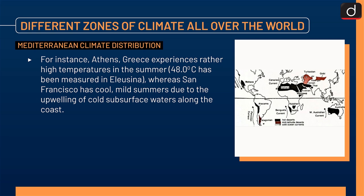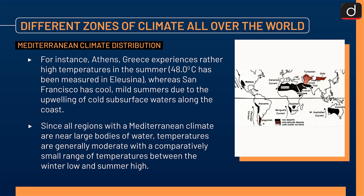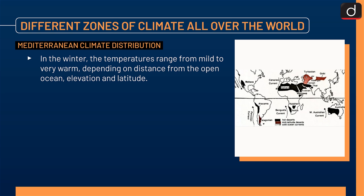Since all regions with a Mediterranean climate are near large bodies of water, temperatures are generally moderate with a comparatively small range between the winter low and summer high. In the winter, the temperatures range from mild to very warm, depending on distance from the open ocean, elevation and latitude.